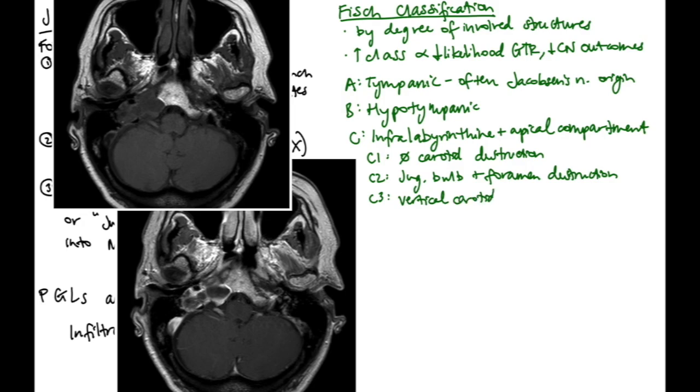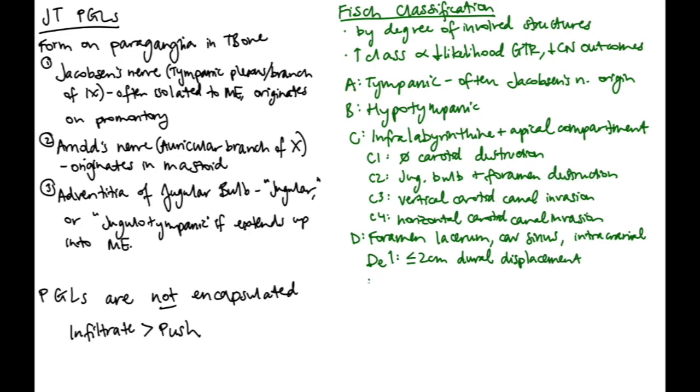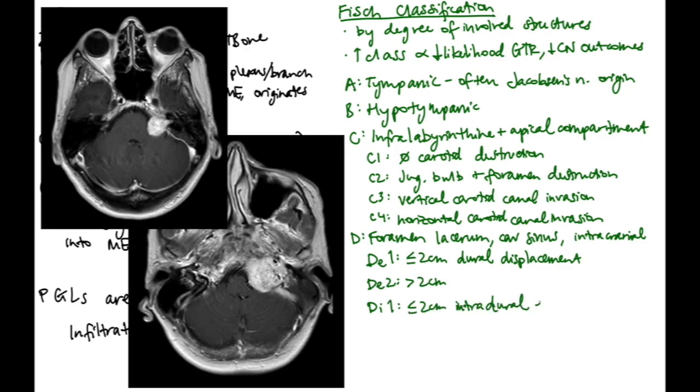Class C is broken down into several subcategories. C1 has no carotid destruction whatsoever. C2 demonstrates some destruction at the jugular bulb and the foramen. C3 has invasion of the vertical carotid canal between the foramen and the bend. And C4 has invasion of the horizontal carotid canal. FISH class D involves the foramen lacerum, the cavernous sinus, and has intracranial components. DE1, the E stands for extradural, means there is less than 2 centimeters of dural displacement. DE2 is greater than 2 centimeters of dural displacement. And then the DI subcategories are intradural extension, less than 2 centimeters and greater than 2 centimeters.